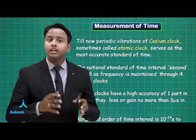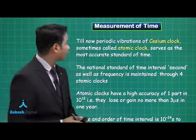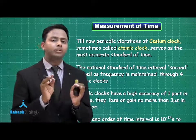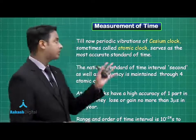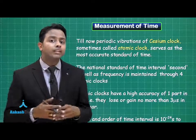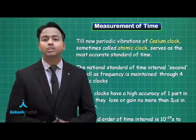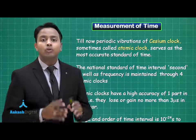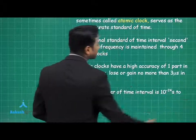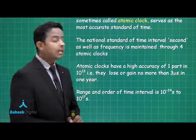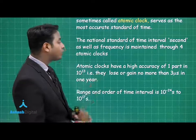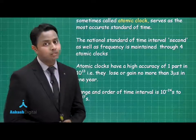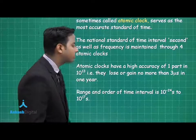The next topic is the measurement of time. Periodic vibrations of a cesium atomic clock serve as the most accurate standard of time. The vibrations of elementary particles in cesium atoms define the one-second interval used as a reference worldwide. The national standard of time is maintained through four atomic clocks. Cesium atomic clocks have an accuracy of one part in 10 to the power 13, meaning over one year they neither gain nor lose more than 3 microseconds. The range of time intervals in the universe extends from 10 to the power minus 24 seconds.